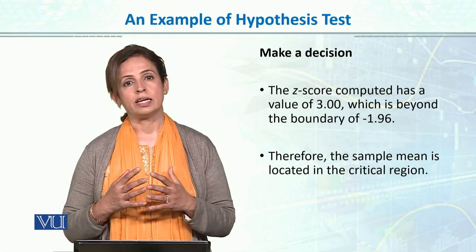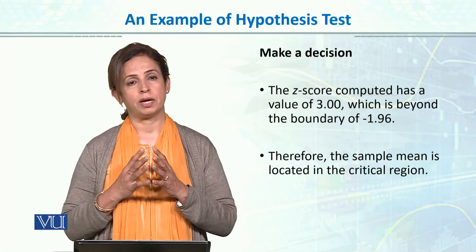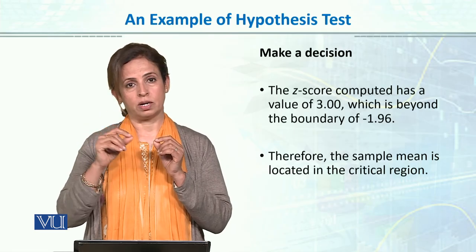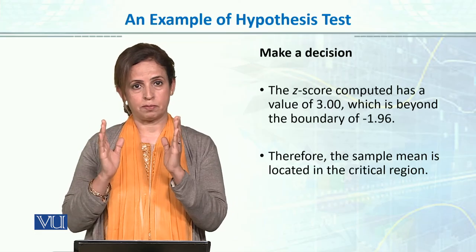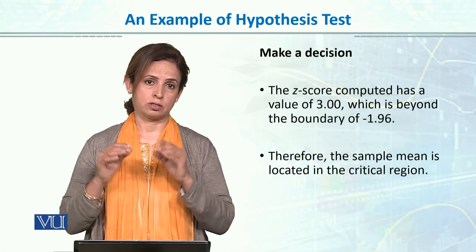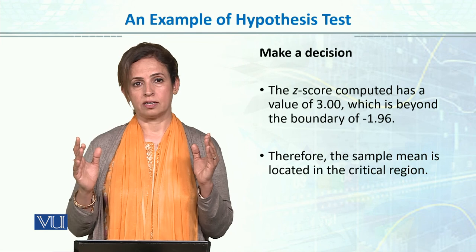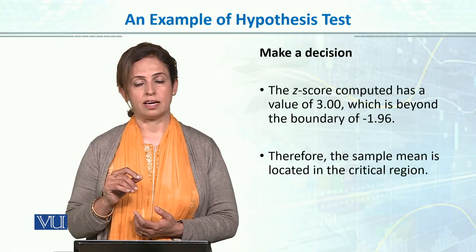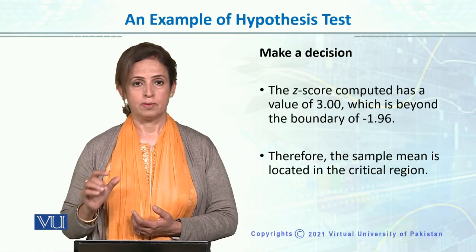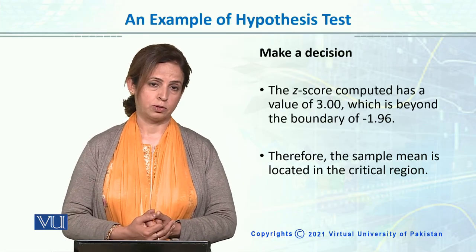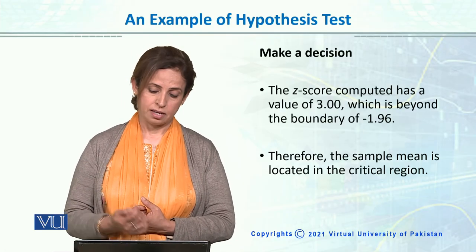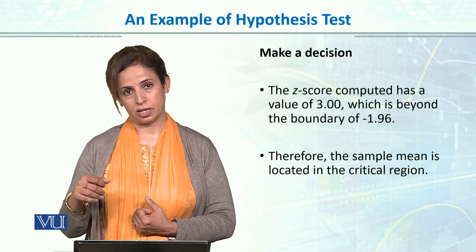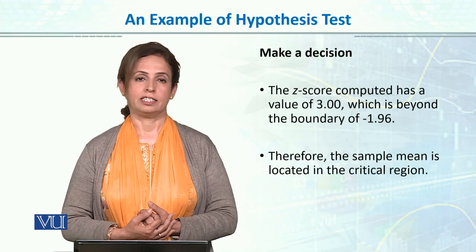Just try to link everything together — how we started with calculating Z, the normal curve, area under the normal curve, sampling distribution, and testing hypothesis on the test value, making a very objective decision. We will reject the null hypothesis and we will find support for the alternative hypothesis that the mean of the population is not equal to 18 grams.